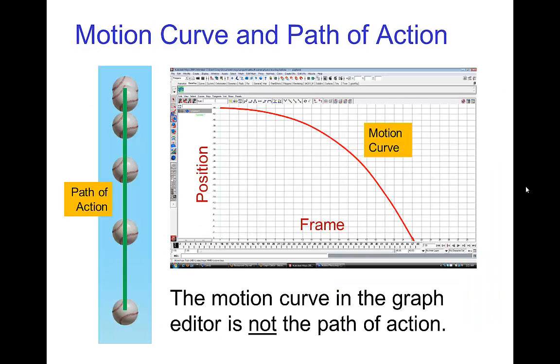One last thing: it's important that you keep in mind that the path of action is not the same as the motion curve that you might see in a graph editor. In this example, if a ball is falling straight down, then we have a very simple path of action. The path of action is a straight line as the ball falls straight down.